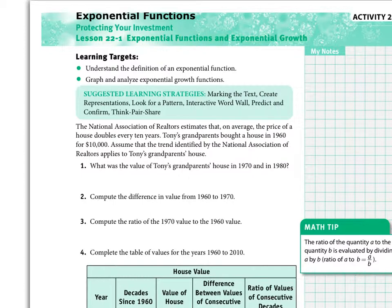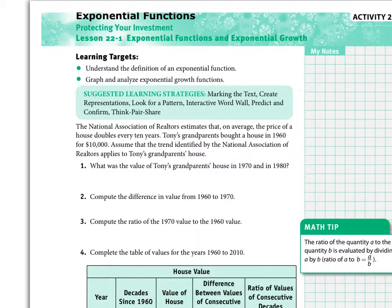The word problem starts: the National Association of Realtors estimates that on average the price of a house doubles every 10 years. Tony's grandparents bought a house in 1960 for $10,000. Assume that the trend identified by the National Association of Realtors applies to Tony's grandparents' house. So basically you have a house purchased in 1960 for $10,000, and it doubles every 10 years.